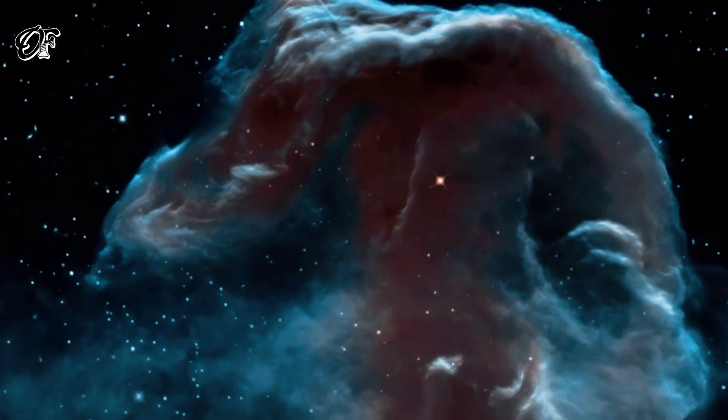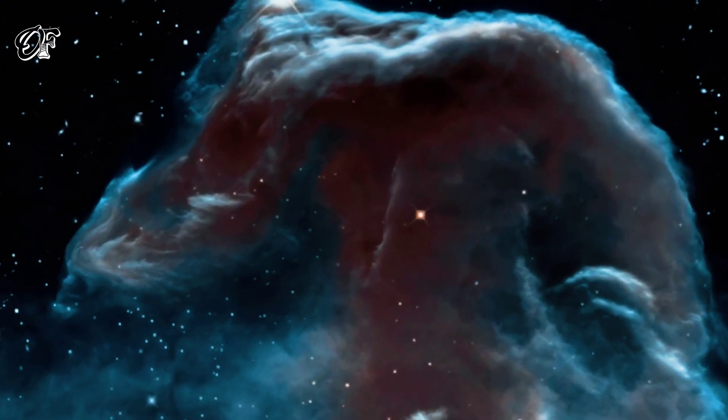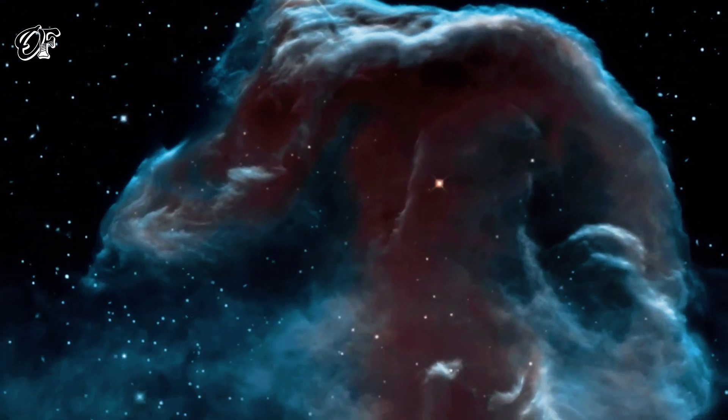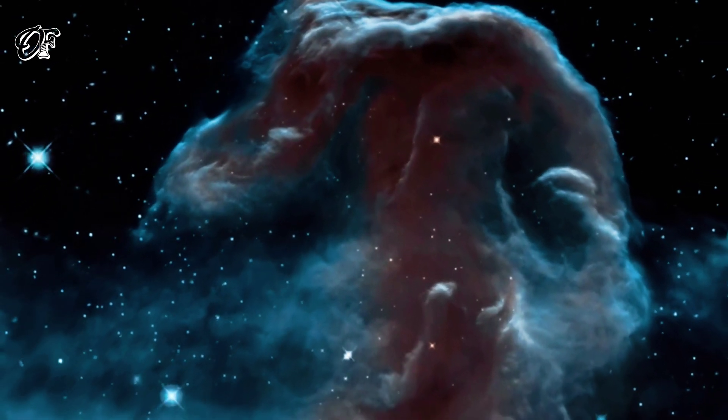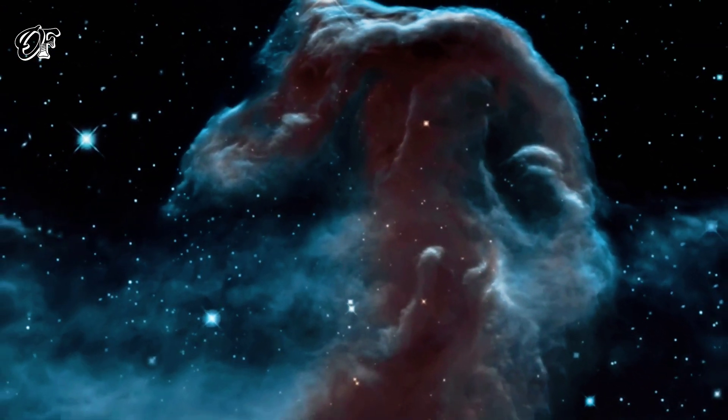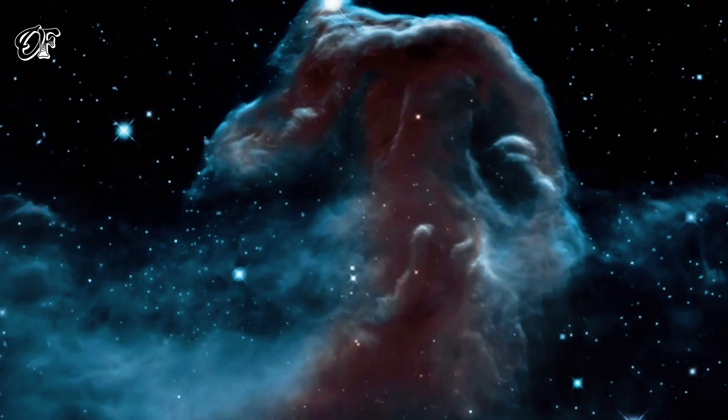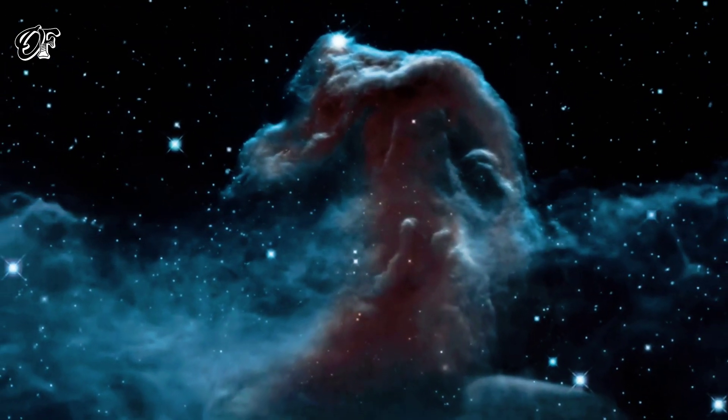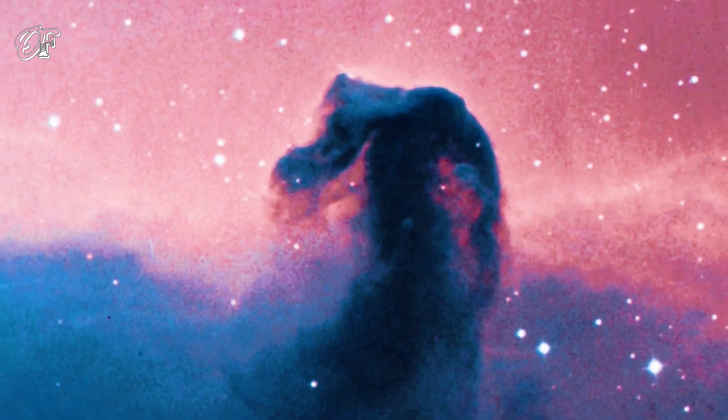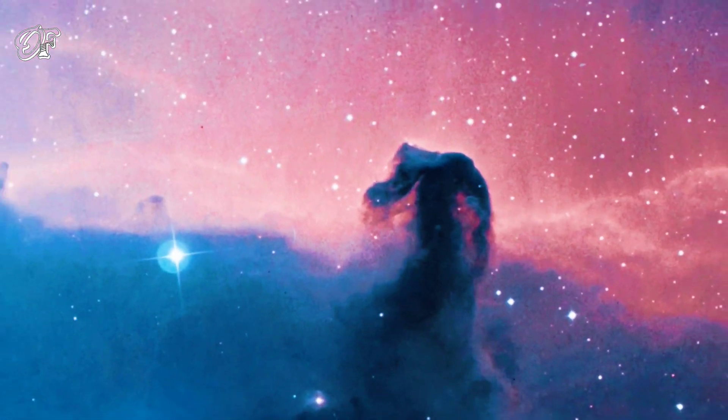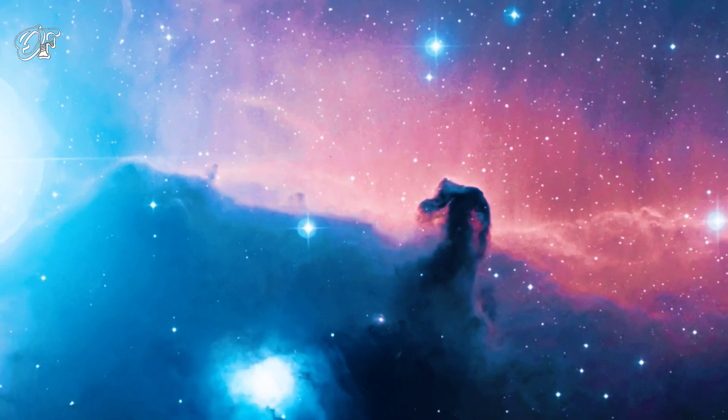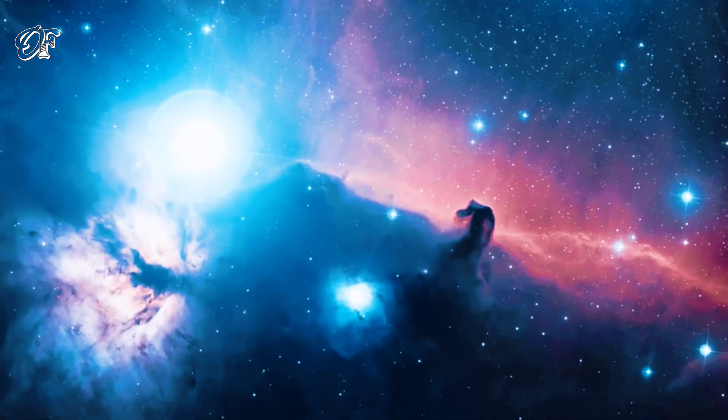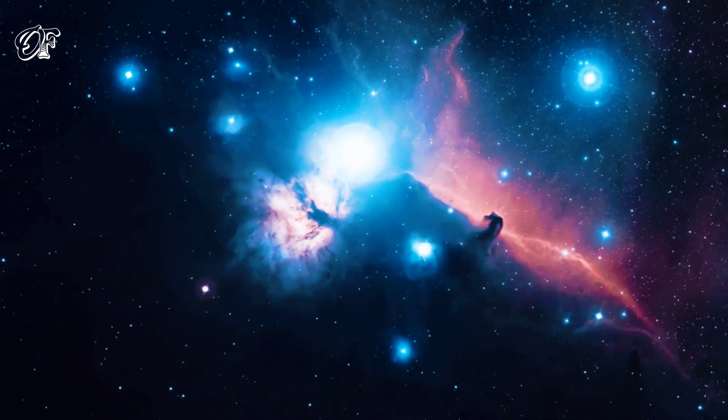As the shock wave from the supernova expanded outwards, it encountered the walls of this cavity and formed the nebula's distinctive structures. Bright filaments are produced as the shock wave interacts with a relatively dense cavity wall, while fainter structures are generated by regions nearly devoid of material. The Veil Nebula's colorful appearance is due to variations in the temperature and density of the gas present.